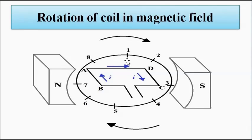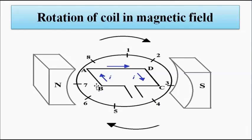These positions exist in pairs: at positions 1 and 5 the EMF is zero; at 2 and 6 the magnitude is the same but the direction is opposite — at 6 it is negative; at 3 and 7 the EMF is maximum. At position 3 the maximum EMF is in the positive direction, at 7 it is in the negative direction. Similarly for positions 4 and 8.